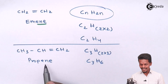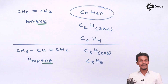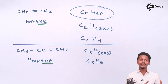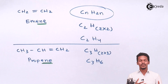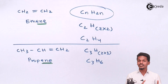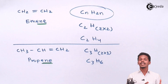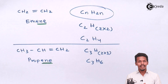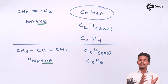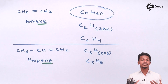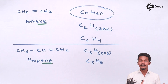Again you can see that it ends with '-ene', which states that this is an unsaturated hydrocarbon containing a carbon-carbon double bond, known as an alkene. But it is not necessary that an alkene will consist of only one carbon-carbon double bond — it could consist of more or multiple carbon-carbon double bonds.